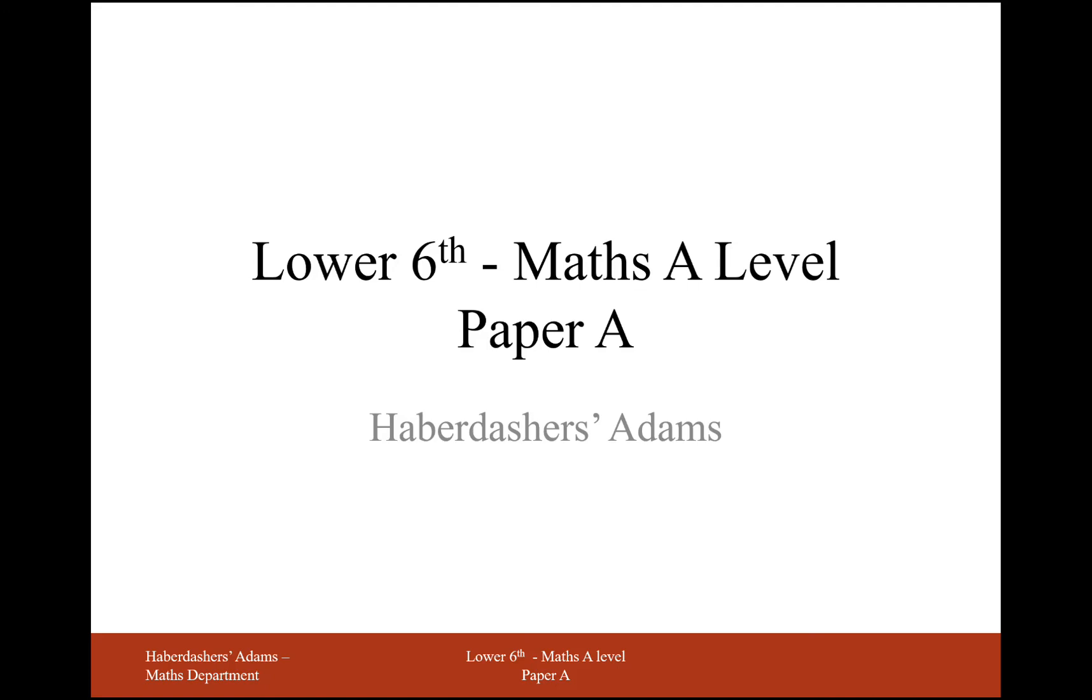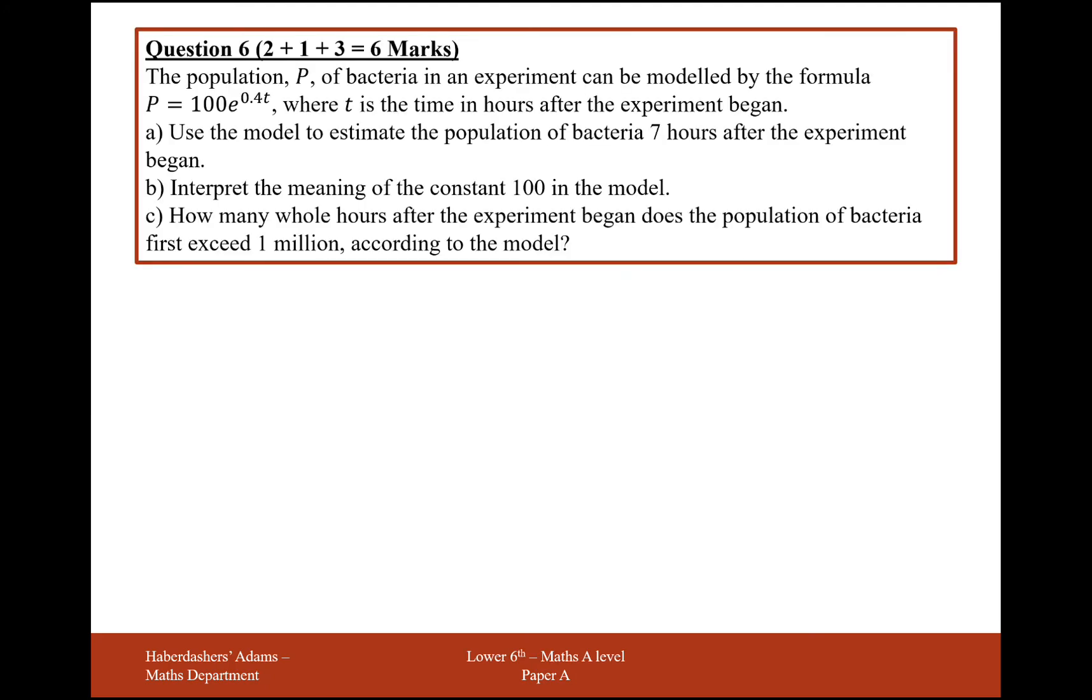Hello there and welcome to Lower 6 Maths A Level Practice Paper A, question 6. The population P of bacteria in an experiment can be modeled by the formula P equals 100E to the 0.4T, where T is the time in hours after the experiment began. Use that model to estimate the population of bacteria 7 hours after the experiment began.